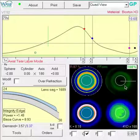Because we're inducing with-the-rule, we're going to decrease sag in the horizontal meridian and increase sag in the vertical. So we're going to lift the lens away from the cornea in the horizontal meridian and get it to touch down a little bit sooner in the vertical.